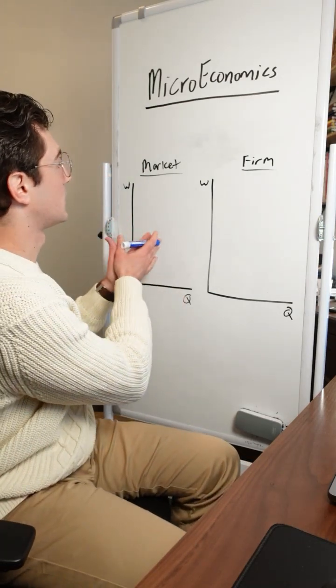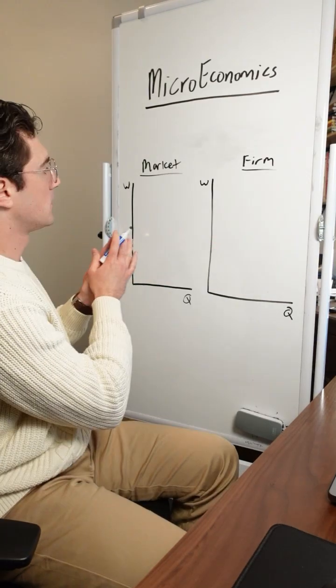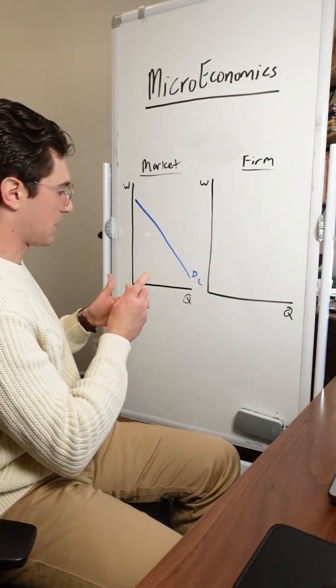With that being said, let's start out by understanding how the labor market works, and then we'll transfer things over to the individual firm. The labor market works like regular supply and demand. We've got demand for labor, downward sloping.